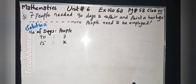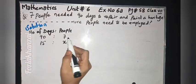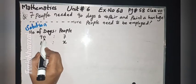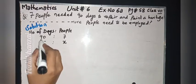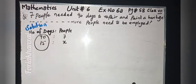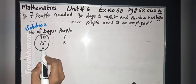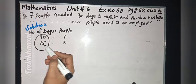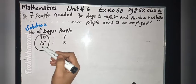Let the number of people be X. Seven people complete the job in 90 days. Now in 15 days, find the number of people. Compare both values — the number of days given are 90 and 15. Compare 90 and 15: it is less.